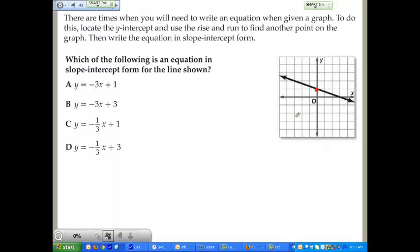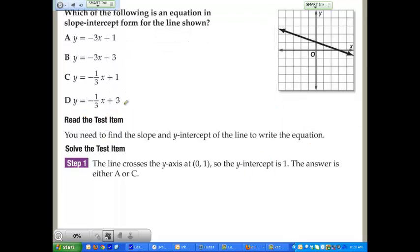The next point it's going to cross is right here. So my slope is going to be rise of negative 1 and run of 3. The slope is going to be negative 1 third. The y-intercept is going to be at 0, 1. So I'm going to have the equation of y equals negative 1 third x plus 1. That would be point C. Therefore, C is going to be the correct answer.